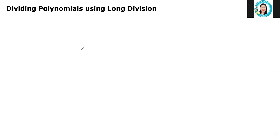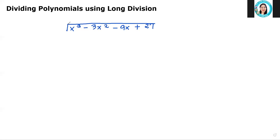Hello. So today I'm going to teach you how to divide polynomials using long division. So first let us have the given, which is x cubed minus 3x squared minus 9x plus 27. For you to divide this by x plus 3, all you have to do is divide the first term by the first term of the divisor.